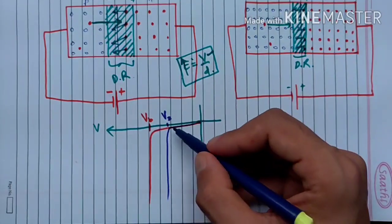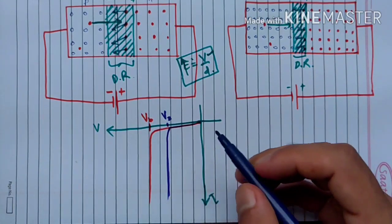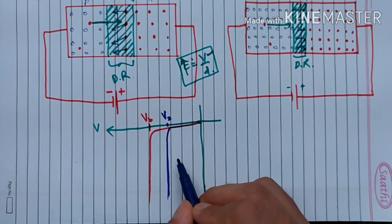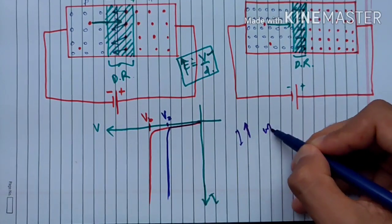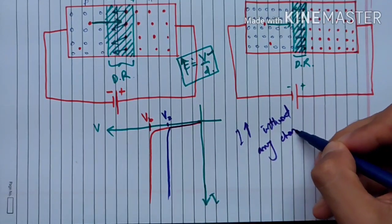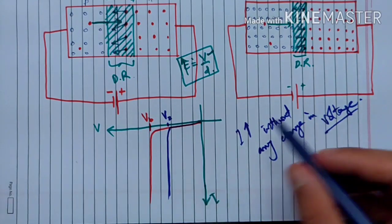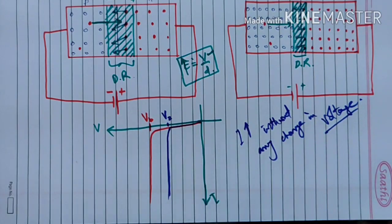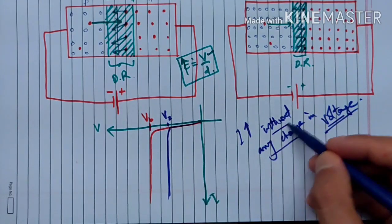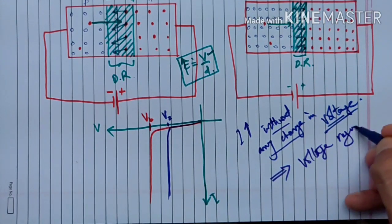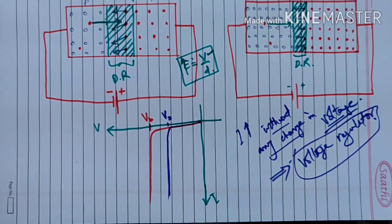جب breakdown ہو جاتا ہے تو sharp increase in current ہوتا ہے۔ Zener diode کی property ہے کہ breakdown کے بعد - zener voltage پہ - current increases without any change in voltage. یعنی constant voltage پہ current بڑھتی ہے - اس property کی مدد سے ہم zener diode کو use کر سکتے ہیں as voltage regulator - یہ ہمیں دے سکتا ہے constant voltage output which is regulated. وہ ہم discuss کریں گے next lecture میں۔ This is a very important concept - zener breakdown and avalanche breakdown. Thank you.